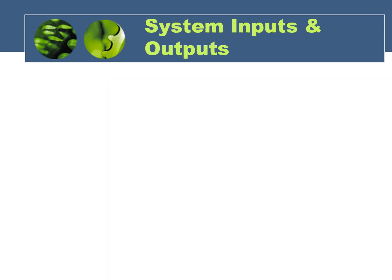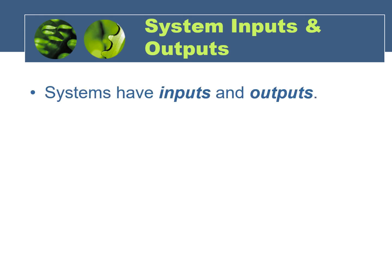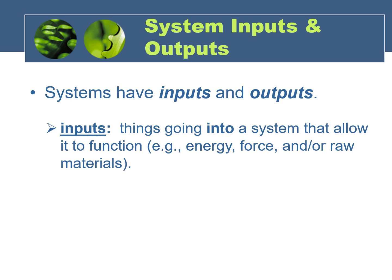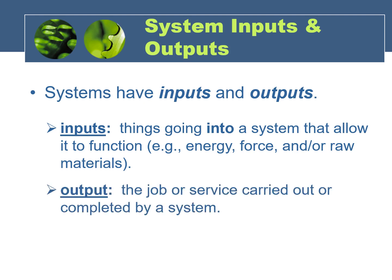The last thing to understand about systems — and this is true of all systems, not just human-made physical systems — is that all systems have inputs and outputs. An input is anything going into a system that allows it to function, so an input could be some type of energy, a force, or necessary raw materials. An output is what comes out of the system — in other words, the job or service that is provided or completed by the system.